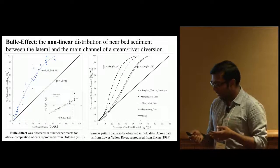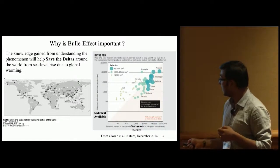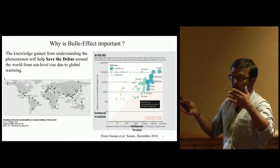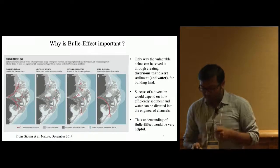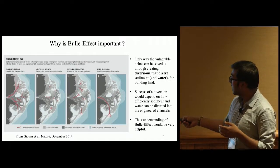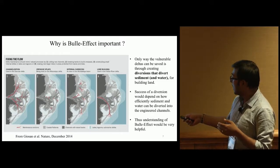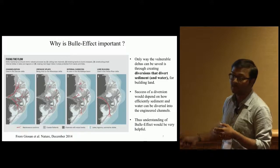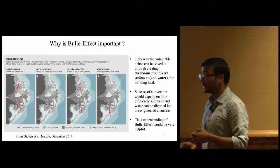What's the motivation? There are many deltas worldwide suffering from lack of sediment. Some solutions involve creating artificial diversions or channels that take water and sediment from the main river to parts of the delta where there's less sediment, helping rebuild the delta and reclaim land.